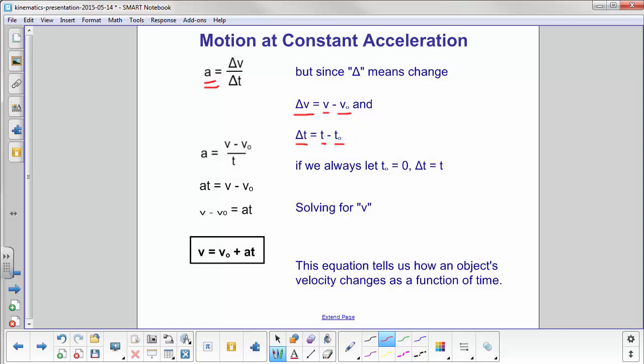We're going to make a little assumption here that all the problems we do, we're going to start at time equals zero. So in that case, t₀ equals zero. If this quantity is zero, we can just say delta t is equal to t.